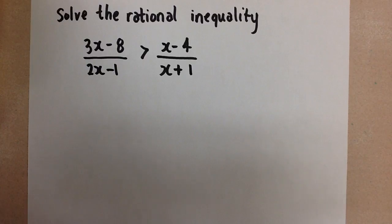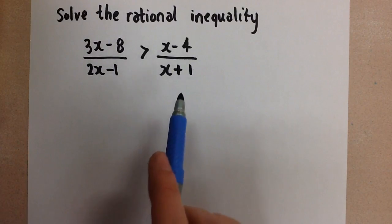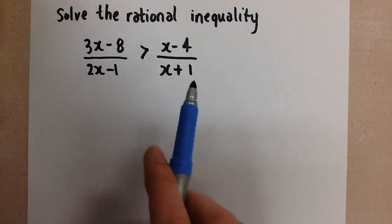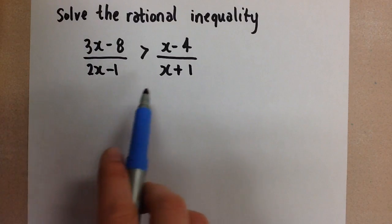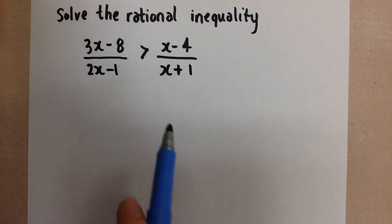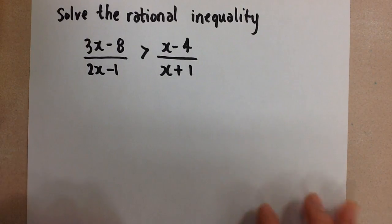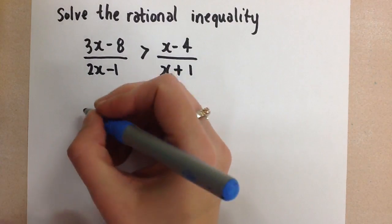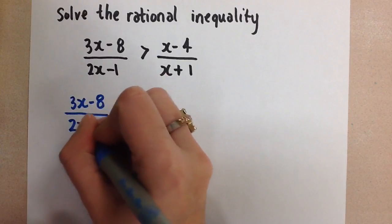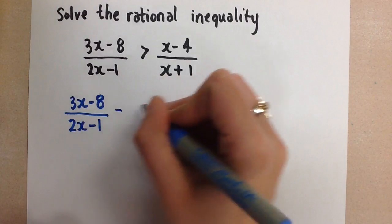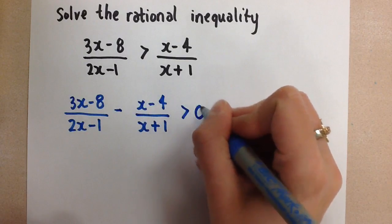We're going to approach this in a similar way. First, we have this rational function greater than this rational function. We want to get everything on one side so we have a zero on the other side, and then we can compare the new function with the x-axis to see when it's above or below, or greater than or less than zero. So we're going to start by subtracting this term over to the left hand side, and this will give us (3x − 8)/(2x − 1) − (x − 4)/(x + 1) > 0.